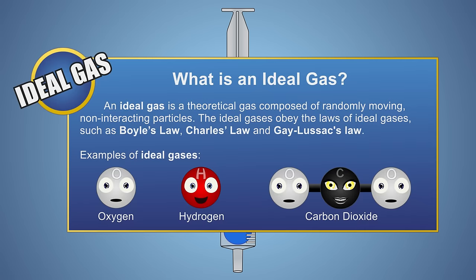An ideal gas is a theoretical gas composed of a set of randomly moving, non-interacting particles. Under normal conditions, many gases, such as oxygen, hydrogen, and some heavier gases, like carbon dioxide, will behave like an ideal gas.